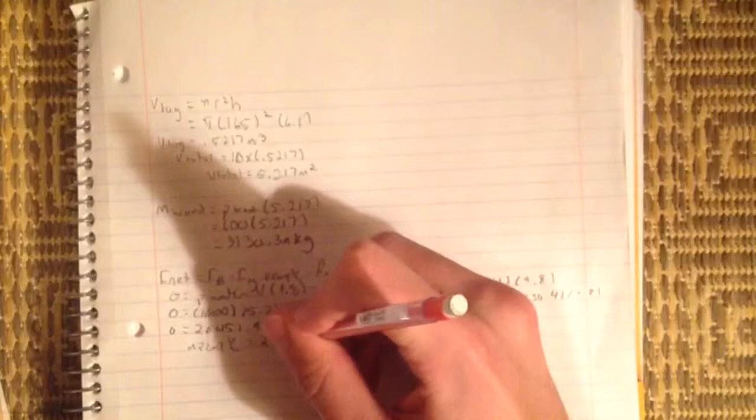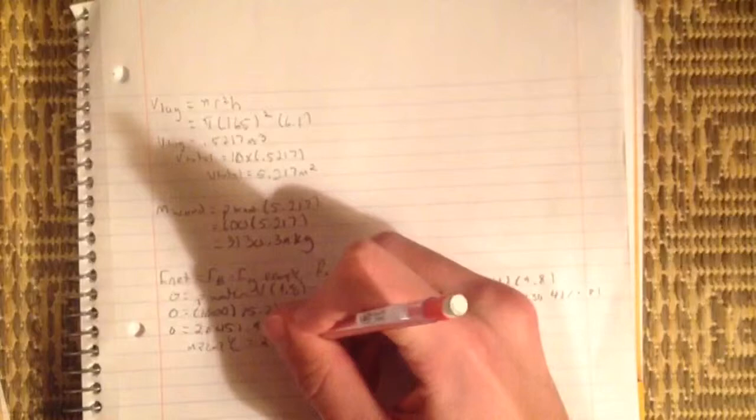So to find the total number of people, we take the total mass of the people, which is 2,086.9 kilograms, and we divide that by the average mass of a person, which is 70 kilograms. The total comes out to be 29.8 people, and the final answer would be 30 people.